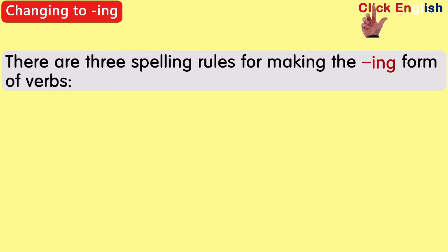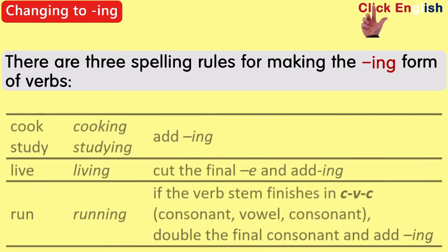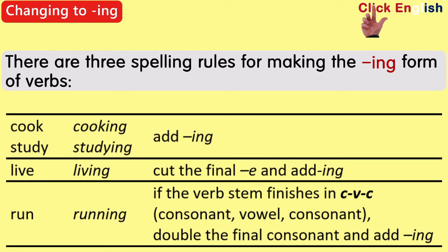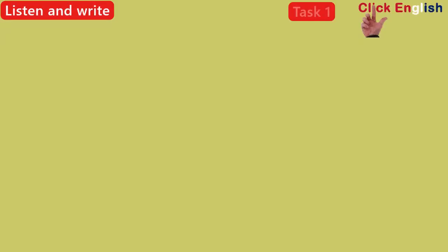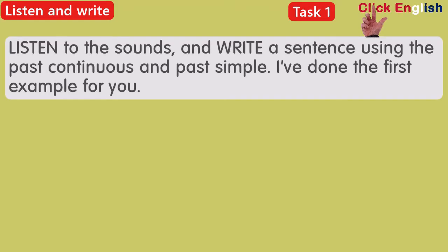There are three spelling rules for forming the -ing form of verbs. Listen to the sounds and write a sentence using the past continuous and the past simple. I've done the first example for you.